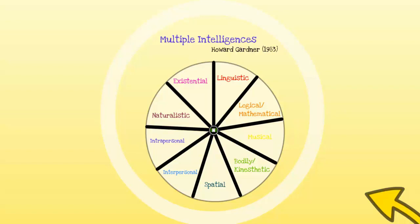Spatial intelligence involves the potential to recognize and use patterns of wide space and confined areas. Interpersonal intelligence is concerned with the capacity to understand motivations, desires, and intentions of other people, so it allows people to work effectively with others. Intrapersonal intelligence entails the capacity to understand oneself, to appreciate one's feelings, fears, and motivations. Naturalistic intelligence has to do with nurturing and relating information to one's natural surroundings, including classifying natural forms of the environment.